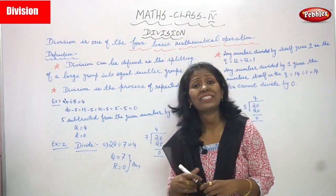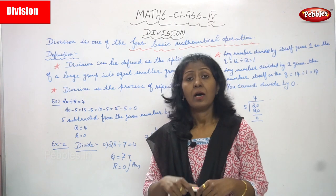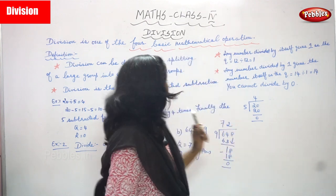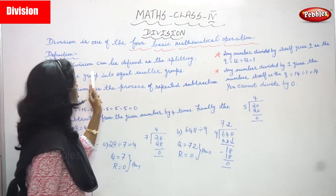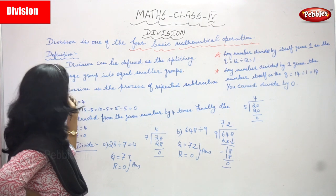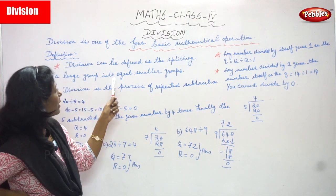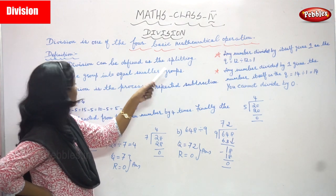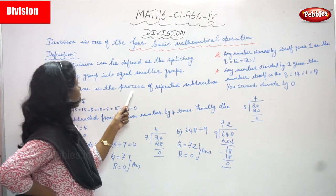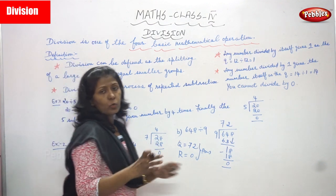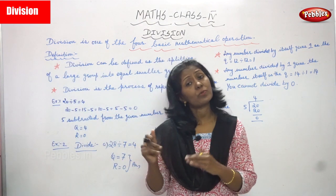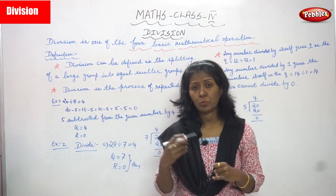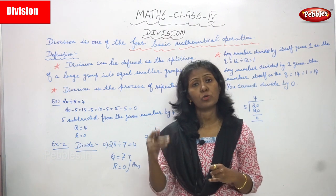So what is division? Division means repeated subtraction. That is one definition. We also have one more definition for division: division can be defined as the splitting of a large group into equal smaller groups. And repeated subtraction is also called division.